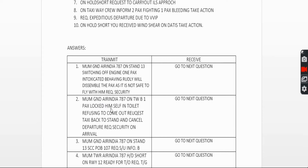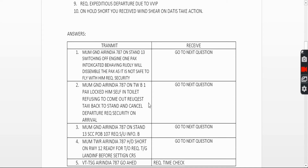For the first and second questions, your examiner might say: 'Air India 787, taxi back to apron via Charlie Bravo.' Then you need to read back and write down whatever instruction is given.